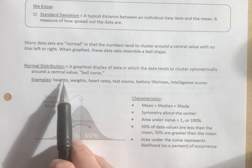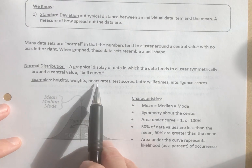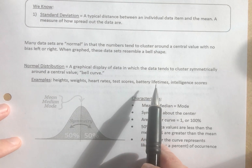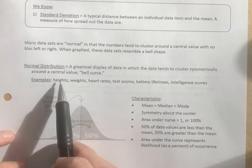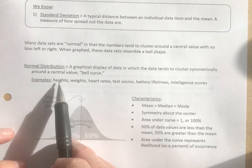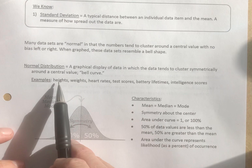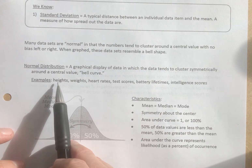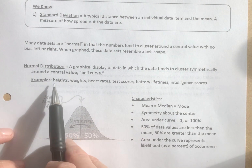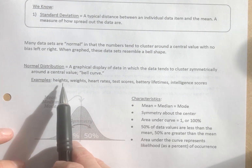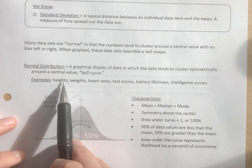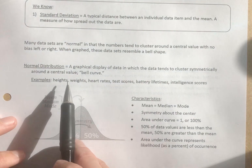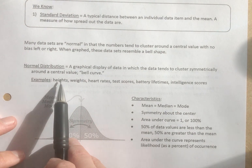Heights are normal. Weights are normal. Heart rates are normal. Test scores, battery lifetimes, intelligence scores, et cetera. For example, let's take the height of US female adults. We'll find that there's an average height around five foot four or five foot five inches, and the vast majority of women tend to cluster around that average. As you get taller and taller, you get fewer and fewer women, and as you get shorter and shorter, you get fewer and fewer women.